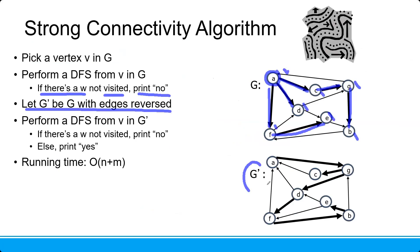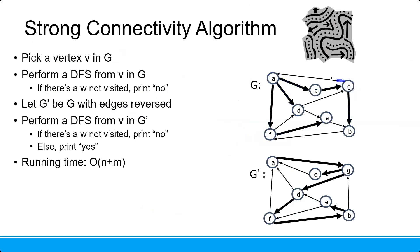Let G prime be G with edges reversed. We want to find: if we know there is a path from G to A, now let's reverse. If we know there is a path from C to G, let's reverse. So we want to find the reverse. If there is reachability for every vertex, we perform DFS again. And if there is a W not visible, print no.